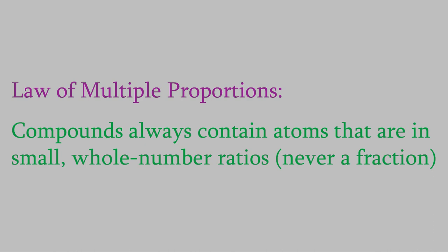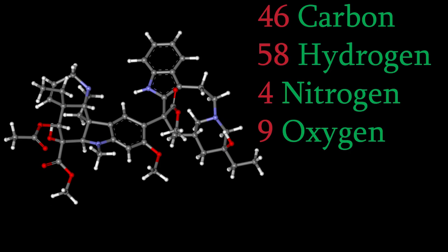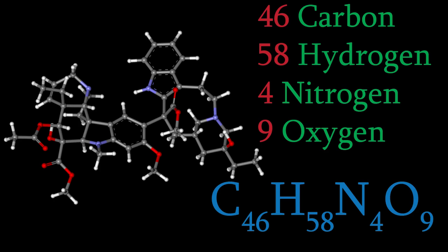This works for all molecules, even very large ones like DNA or proteins or pharmaceuticals. For example, the chemotherapy drug vinblastin contains carbon, hydrogen, nitrogen, and oxygen in a 46 to 58 to 4 to 9 ratio. So its formula is C46H58N4O9.